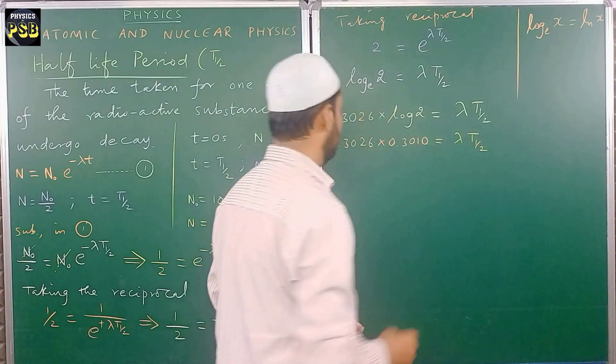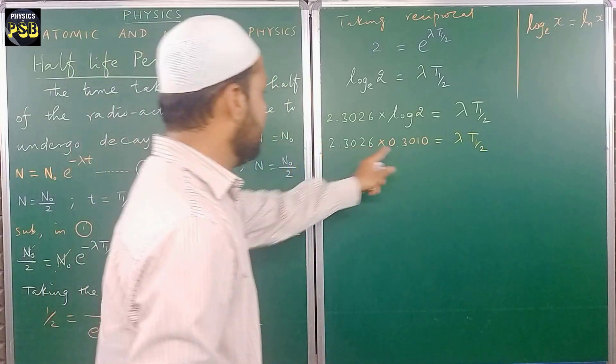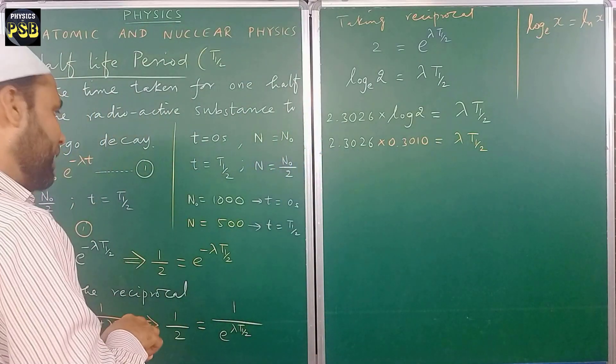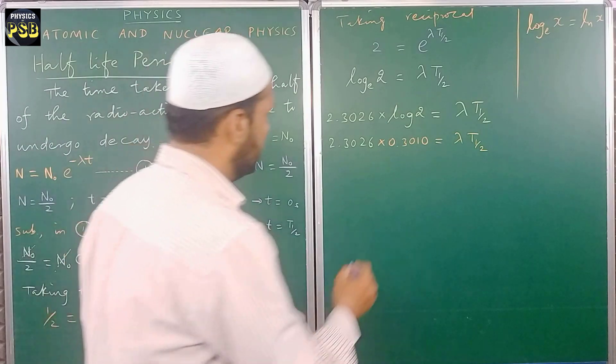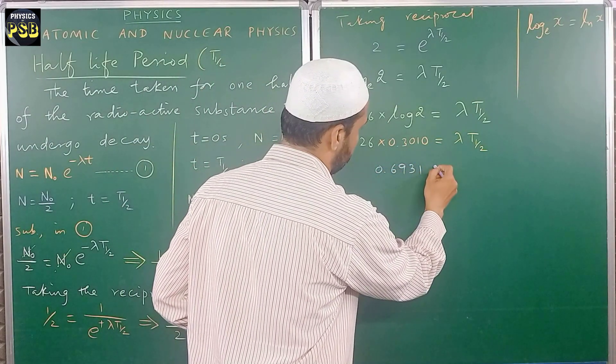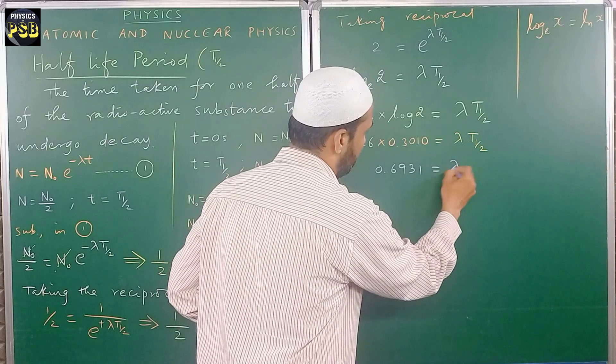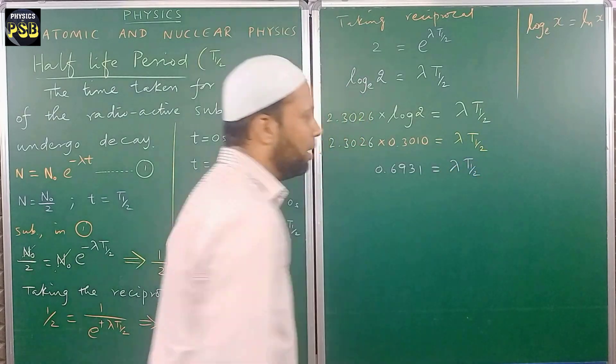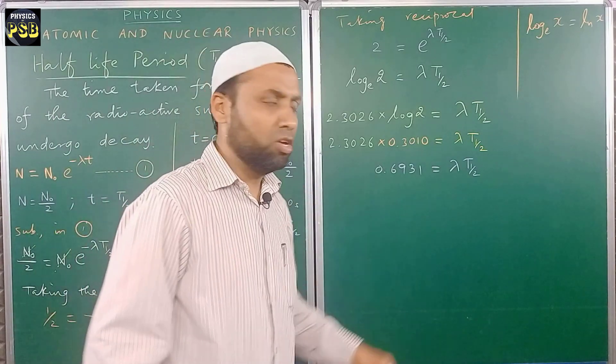So what I'll get if you do so, this side equals lambda t half. On multiplying these two, I get the value as 0.6931.